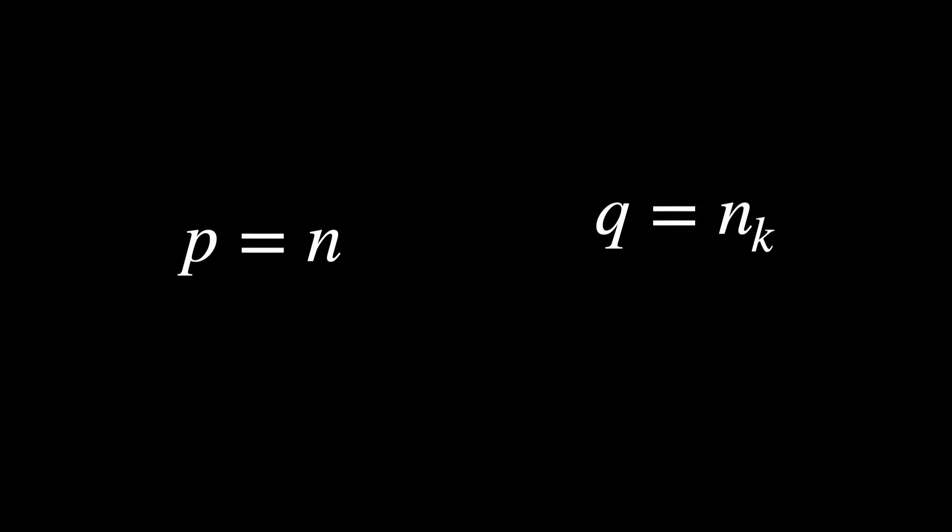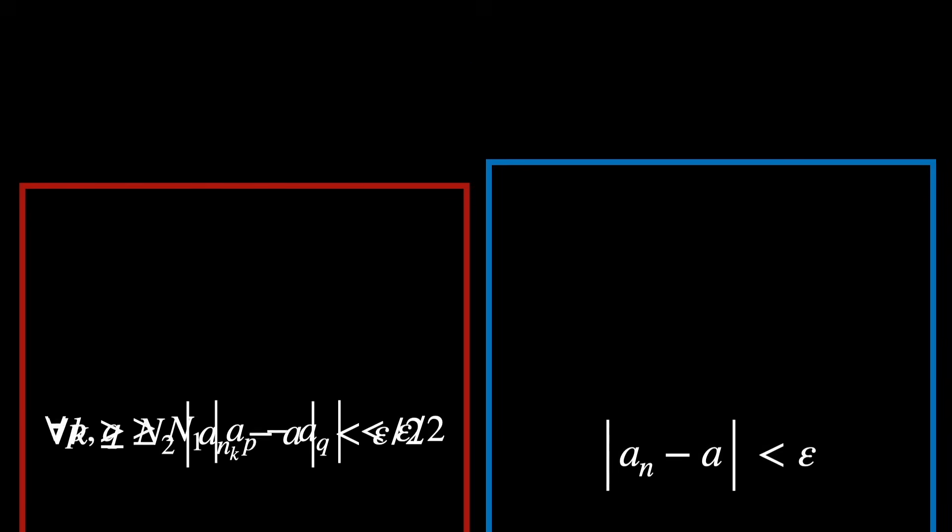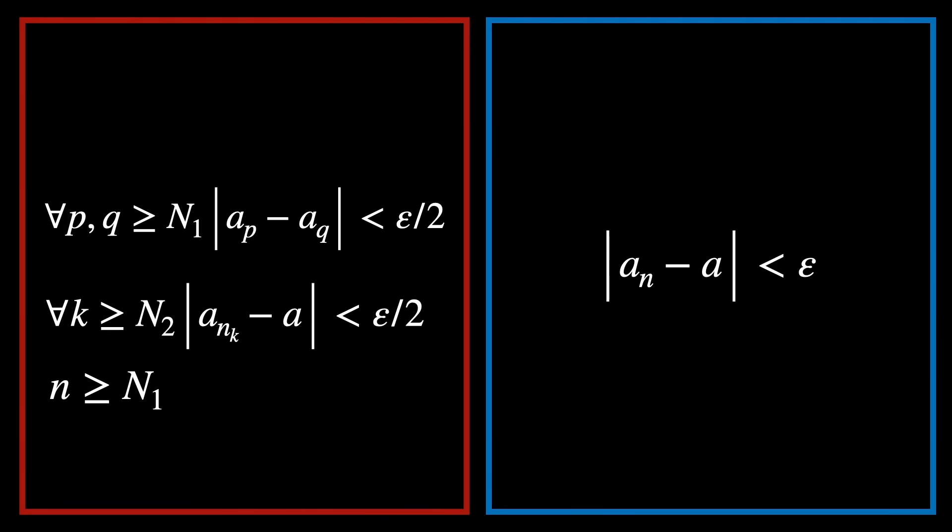Earlier, we said that we would eventually choose p equals n and q equals n sub k. Now we are locking that in. We can choose p equals n because we previously assumed that little n was greater than or equal to capital N1, which is the condition needed to use the first hypothesis.